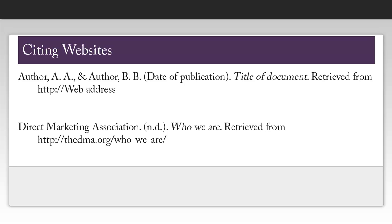Now we can create our citation. If you have a corporate author, you'll want to capitalize every word of their name and avoid using the short form — in this case, DMA. If you don't have an author, you're going to put the name of the webpage first, then the date, then the link. You'll notice that because I didn't have a date for this particular page, I just put 'n.d.' for no date.